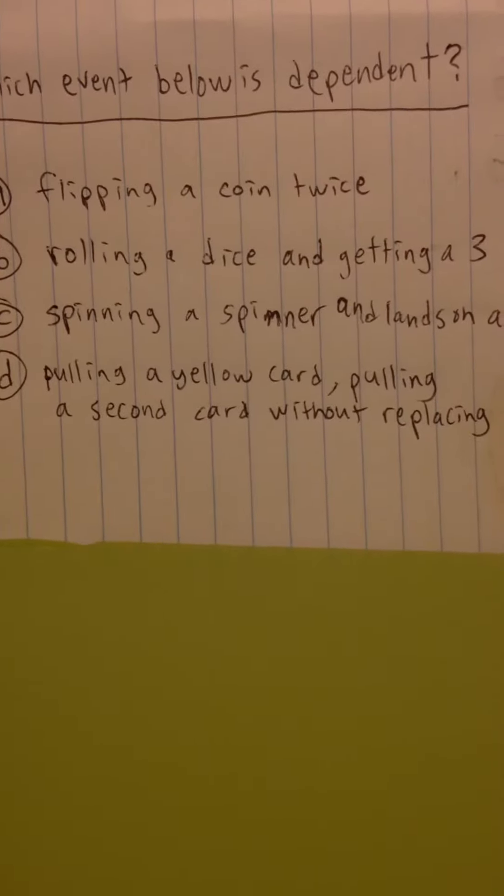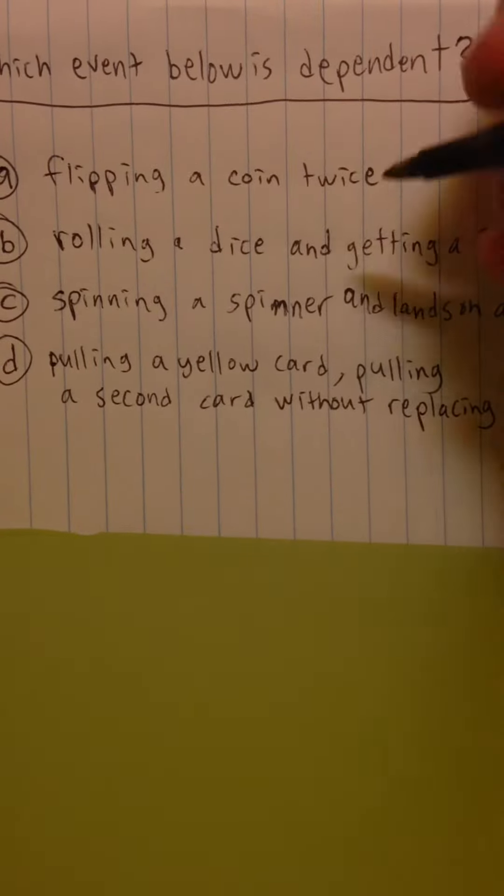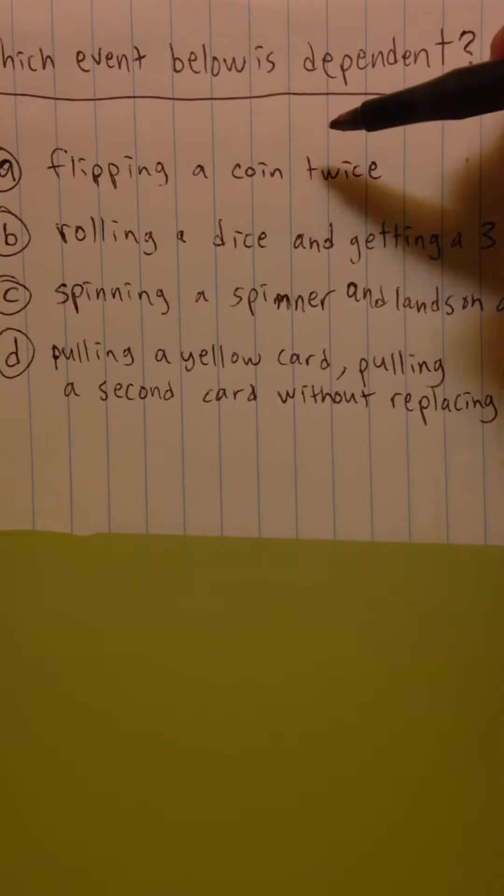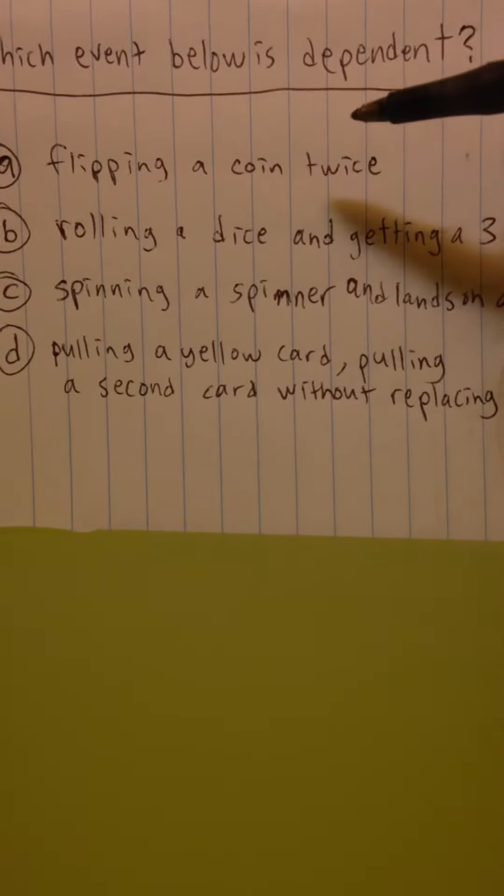First choice is flipping a coin twice. Now, every time you flip a coin, the event is always going to be dependent. Independent, I mean, independent.